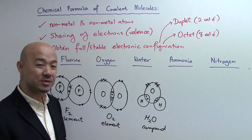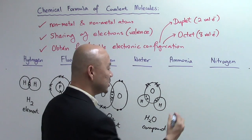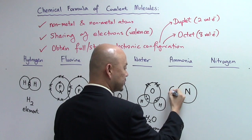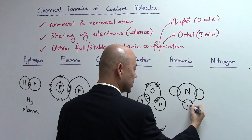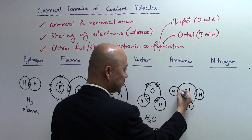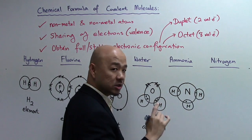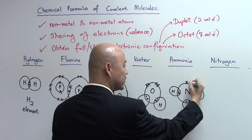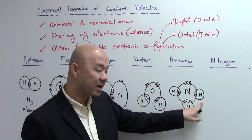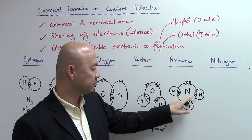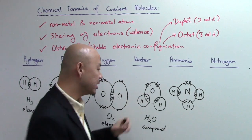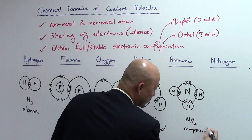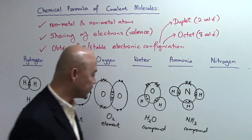Now for ammonia: we have one nitrogen atom and three hydrogen atoms. Nitrogen is in group five of the periodic table, so it has five valence electrons. Each hydrogen is happy with the duplet after bonding. Nitrogen, after bonding with the three hydrogen atoms, has eight valence electrons — the octet structure — so it's very happy too. The formula is NH3, and ammonia is a compound because two different types of elements are involved, just like water.